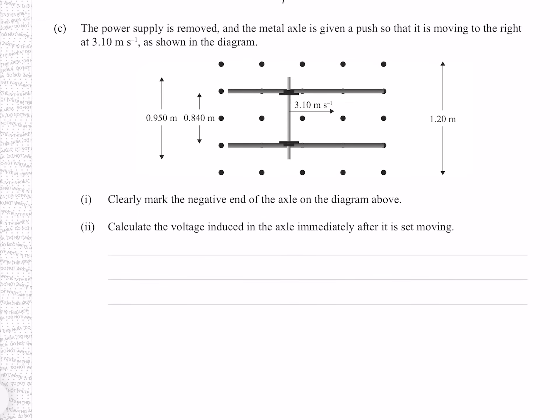The power supply is removed and the metal axle is given a push so that it is moving to the right at 3.10 metres per second. Clearly mark the negative end of the axle. We again use the right-hand rule: fingers point out of the page and because the rod is moving to the right, the charges are also moving right, so we point our thumb to the right. This indicates positive charges are forced downwards and negative charges are forced in the opposite direction, towards the top.